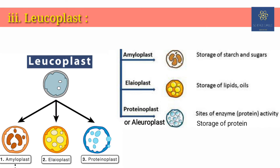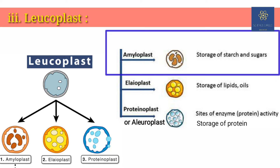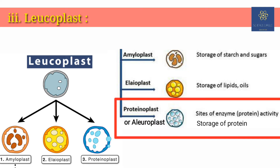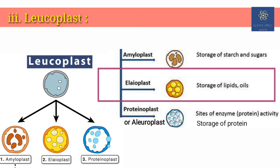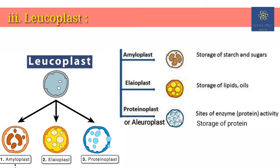Leucoplasts are of three types: amyloplast, aleuroplast, and elaioplast. Amyloplast is the largest among all three and helps in storing starch. Aleuroplast helps in storing proteins that a plant needs and can typically be found in seeds. Elaioplast helps in storing fats and oils that are needed by a plant.